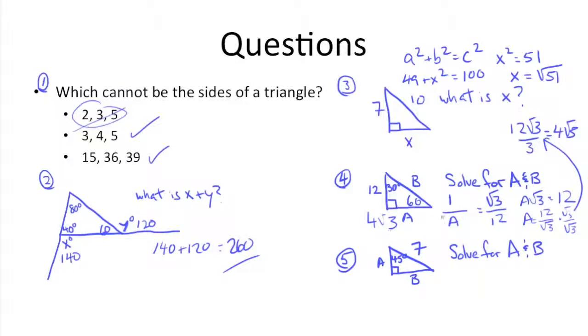If we know that side a is 4 root 3, that means that side b, the hypotenuse, is just two times that. So it's 8 root 3.